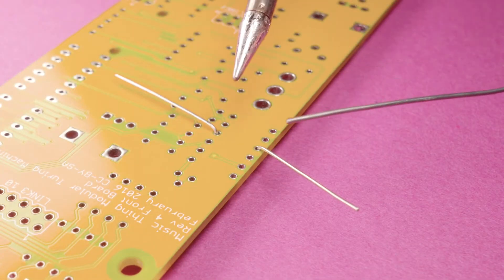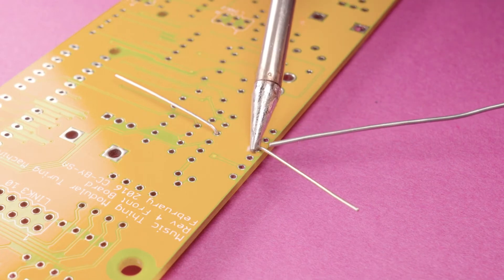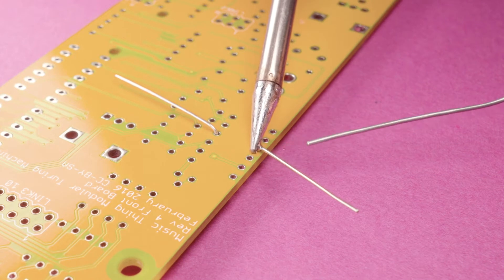And this is the easy part. You just put a little bit of solder on the tip, and you just don't need that much, and just let it flow down.